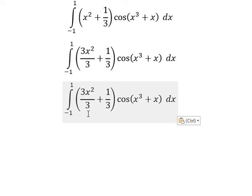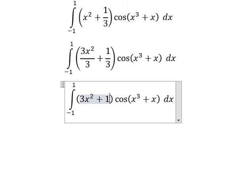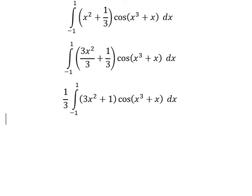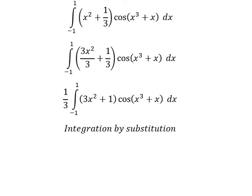So we have a common denominator. We can factor out 3x² + 1, and I will put 1/3 in front. Next we need to use integration by substitution, so I will set u equal to x³ + x.